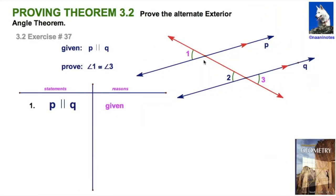Welcome to 90 notes. Here we're going to prove the alternate exterior angle theorem. This is exercise number 37, section 3.2, if your textbook looks like that one in the lower right corner.